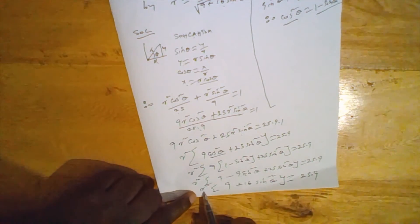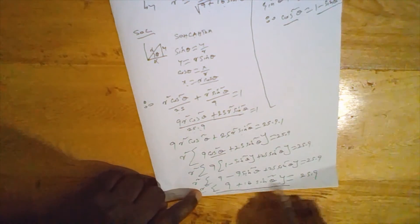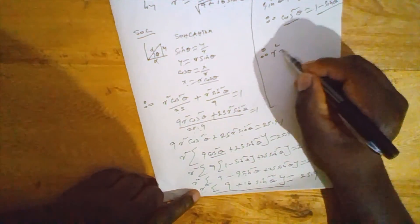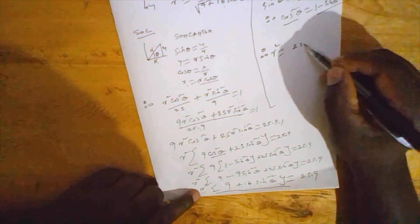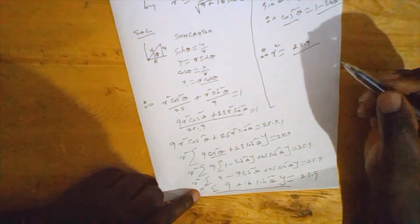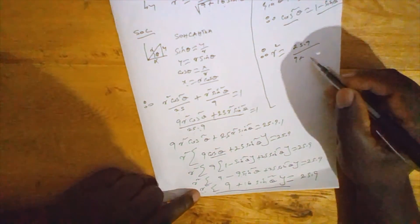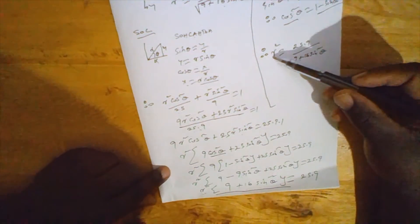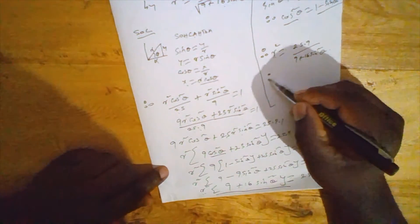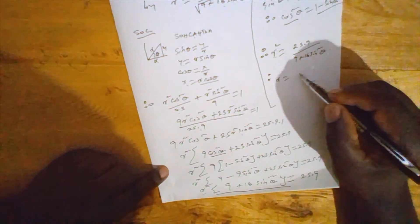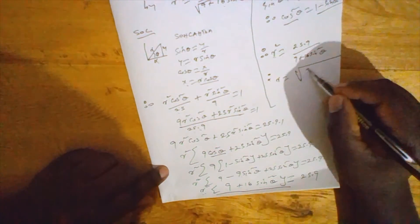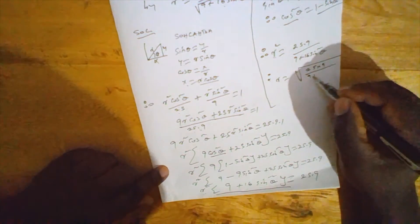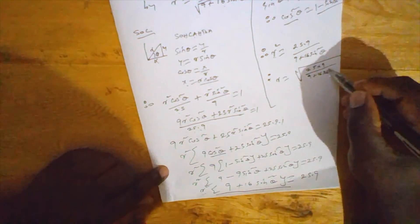To isolate r squared, we divide both sides by (9 plus 16 sin squared theta). Therefore r squared equals 25 times 9 over 9 plus 16 sin squared theta.